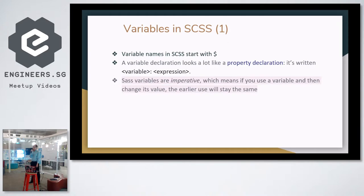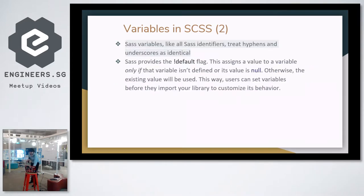So what are the variables in SCSS? Variable names in SCSS start with a dollar sign. A variable declaration looks a lot like a property declaration, written as $variable: expression. SCSS variables are imperative, which means if you use a variable and then change its value, the earlier use will stay the same. SCSS variables, like all Sass identifiers, treat hyphens and underscores as identical. It provides a !default flag where it assigns a value to a variable only if that variable isn't defined or its value is null. Otherwise, the existing value will be used, so users can choose which variables to set before importing a library to customize its behavior.